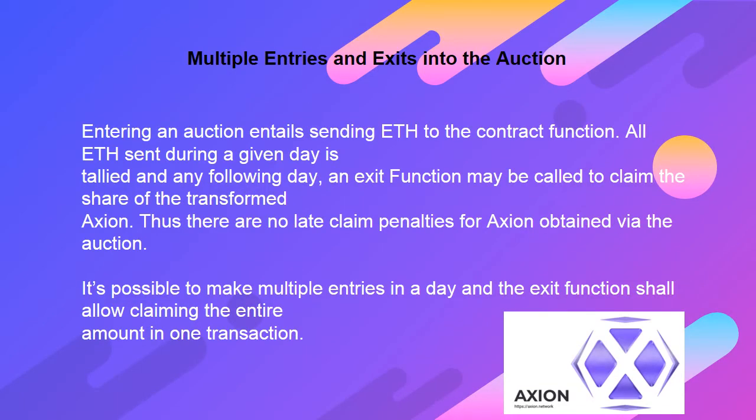Multiple entries and exits into the auction: entering an auction entails sending ETH to the contract function. All ETH sent during a given day is tallied, and on any following day an exit function may be called to claim the share of the transformed Axion. Thus, there are no late claim penalties for Axion obtained via the auction. It's possible to make multiple entries in a day, and the exit function shall allow claiming the entire amount in one transaction.